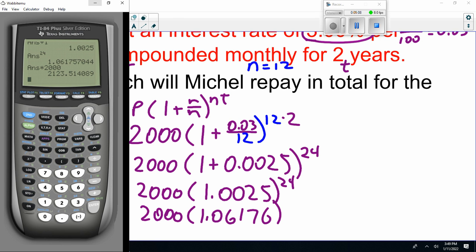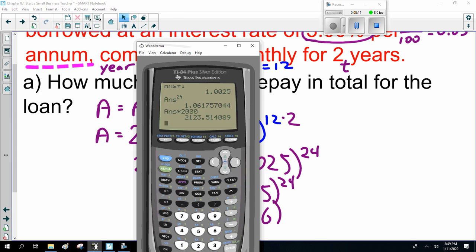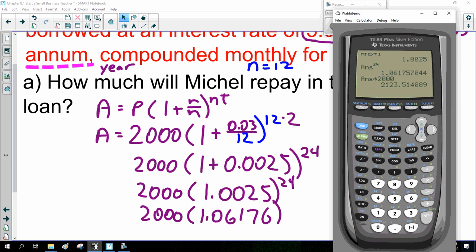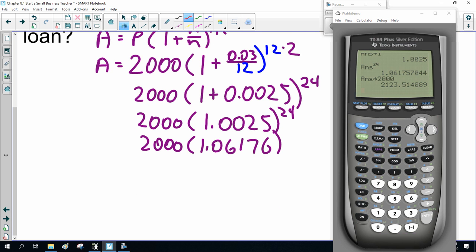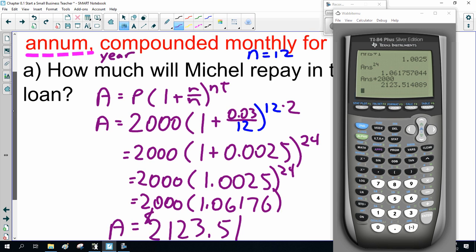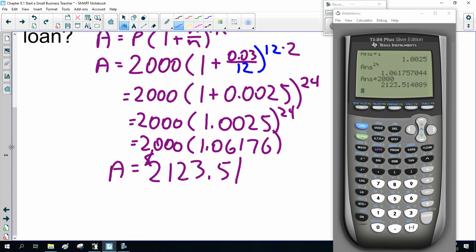Sorry about that, arguing with the calculator. The amount in total he has to pay back is $2,123.51. So, he borrows $2,000 and pays back $2,123.51.